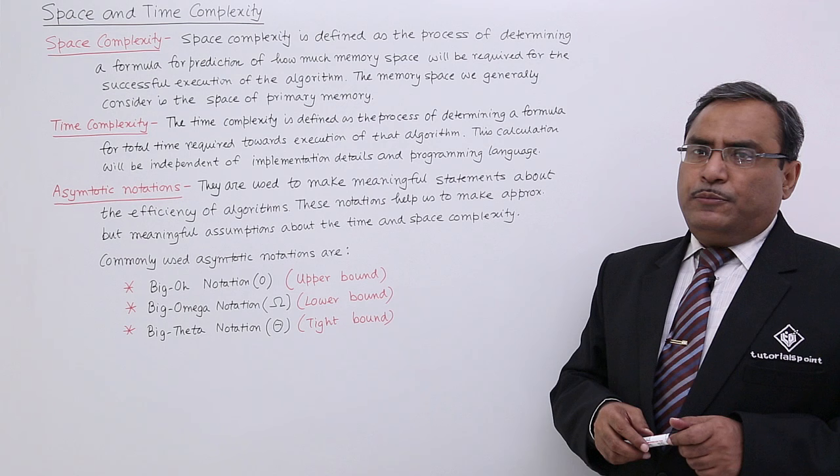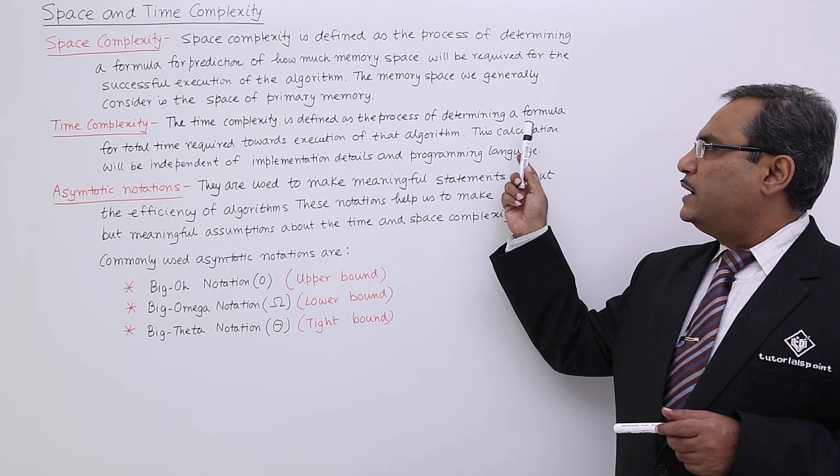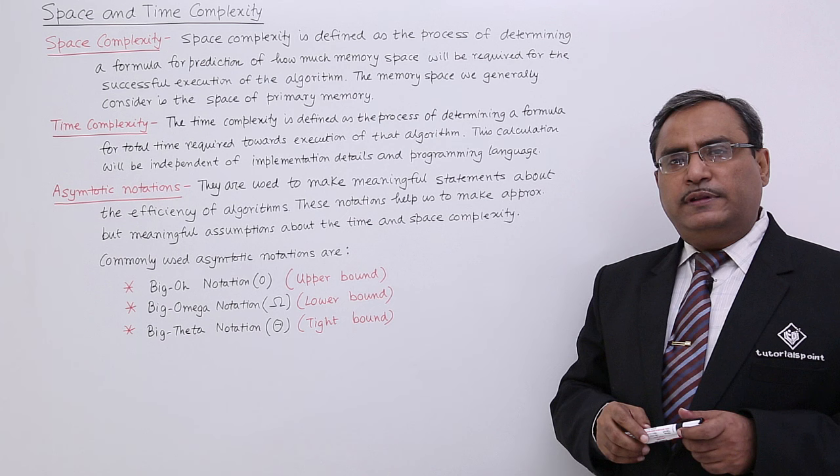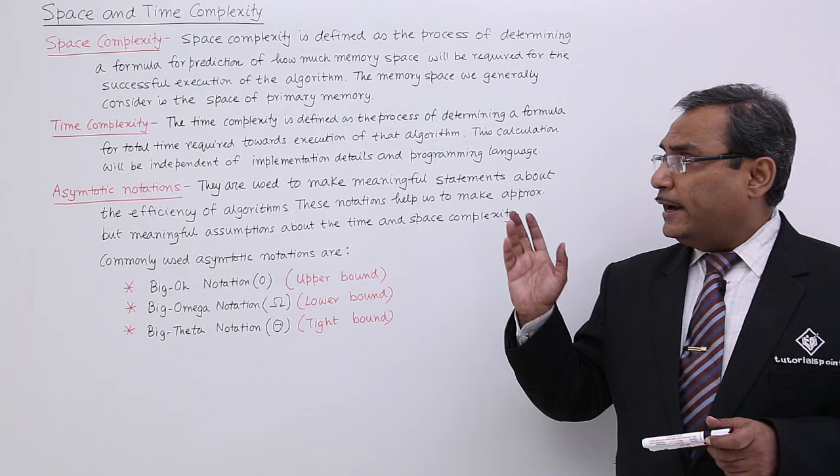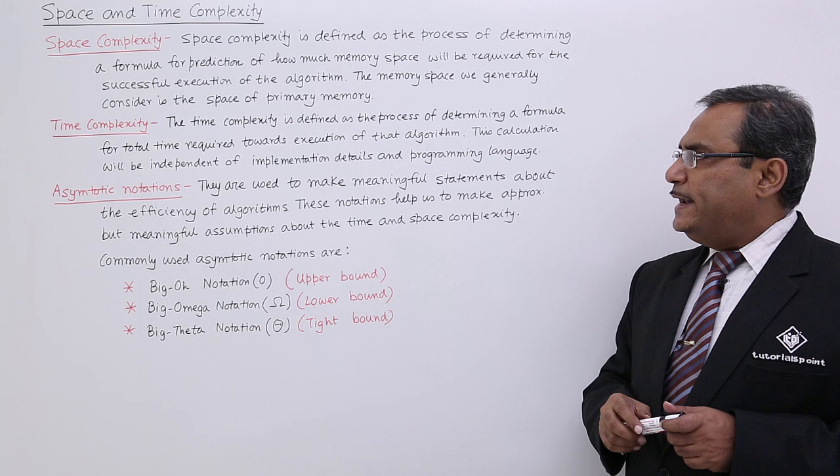Time complexity is defined as the process of determining a formula for the total time required towards execution of that algorithm. During the execution of the algorithm, the total time required — that will be decided by the time complexity. This calculation will be independent of implementation details and obviously, the programming language.